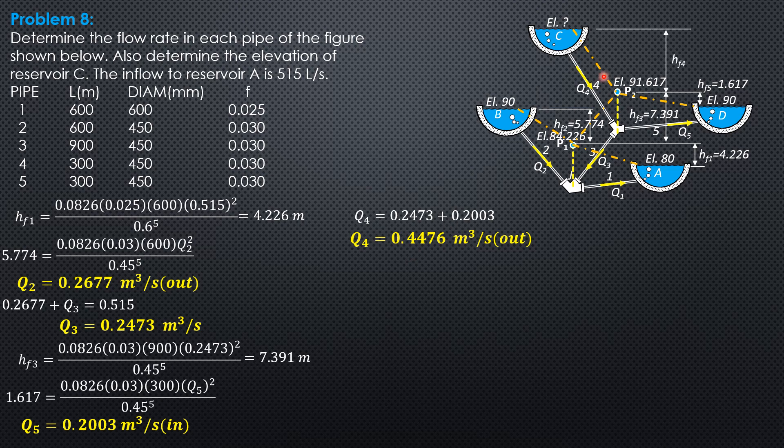Having known Q4, we can now compute HF4. HF4: 0.0826, friction factor 0.03, length 300, discharge 0.4476 squared over diameter 0.45 raised to 5. So HF4 is 8.071 meters.